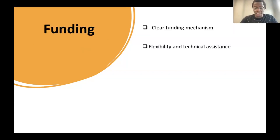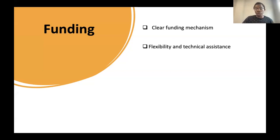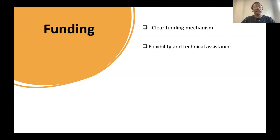The third key element is funding. Community-led monitoring needs to be funded. It's a process, and whoever is working in that process — we need to account for their time and any costs attached to the process. We cannot undermine CLM just because it is addressing community needs and is mainly done on a voluntary basis in some places. Funding is a key element for CLM that we need to take into consideration.